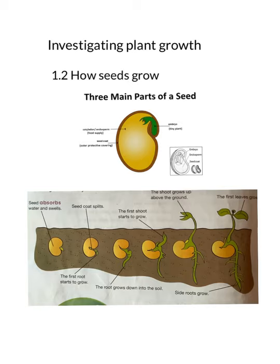Now let us look at the different stages of germination. A seed is sown in the soil. When it receives enough water, it swells up — it absorbs water through the scar or micropyle found in that region of the seed. The cotyledon starts swelling up as it absorbs water, and then the seed coat starts opening up and splits open, giving enough space for the embryo to grow.